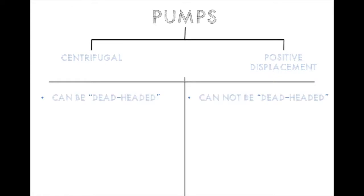At a high level, there's centrifugal and PD pumps. One of the major differences is that centrifugal pumps can be deadheaded, and positive displacement pumps cannot be deadheaded. That means if there is no place for the liquid to be pumped to, the pressure will spike and can hurt the pump. Centrifugal pumps typically have lower maintenance; PD pumps typically have higher maintenance with more parts.